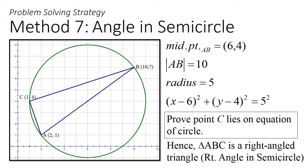From circle properties, we know that any angle subtended from the diameter has to be a right-angled triangle.